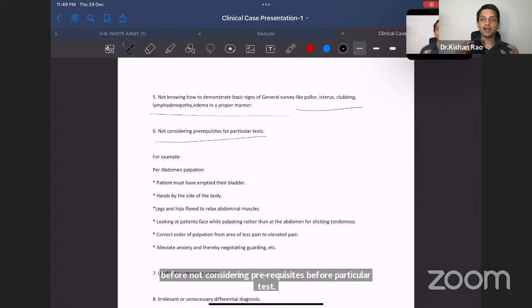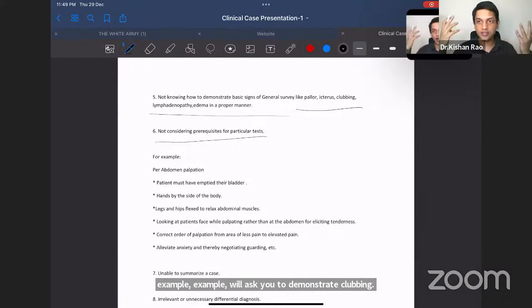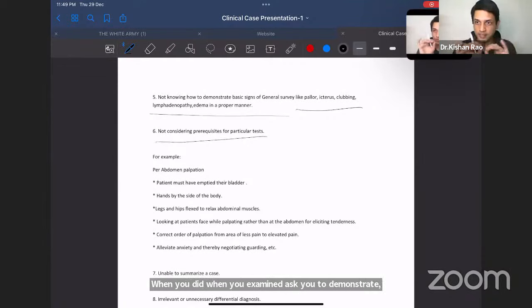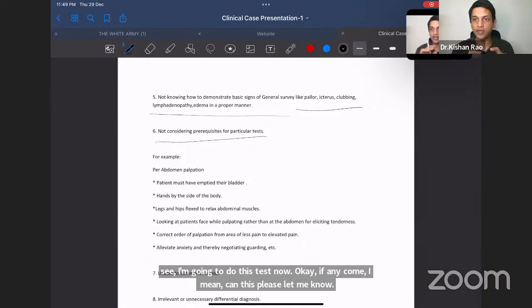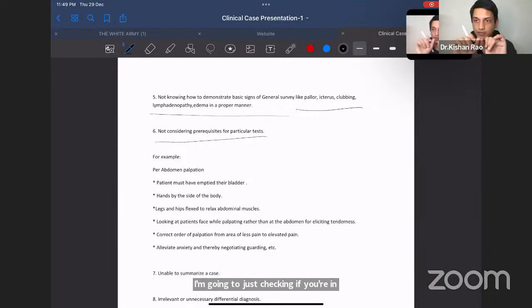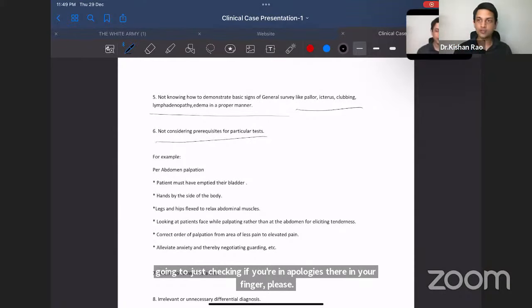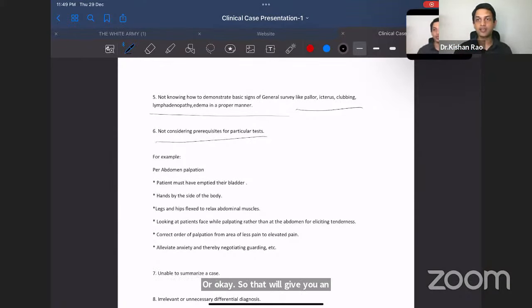See, I'm going to do this test now. If any discomfort, please let me know. I'm going, just checking if you have any bulges there in your finger, please. Then you ask him to do this way. What are the signs? So that will give you an impression to the examiner. Oh, his approach is good. He's following proper method. Even for some prerequisites before doing the examination, like for per abdomen palpation, the patient must have emptied the bladder hands by the side of the patient must keep hands by the side of the body. Legs and hips must be flexed up. And, you must be looking at the patient face instead of a patient's abdomen while palpating and correct order of palpation and elevating his anxiety. All those things. Pre-requisites while palpating, you must take care of.